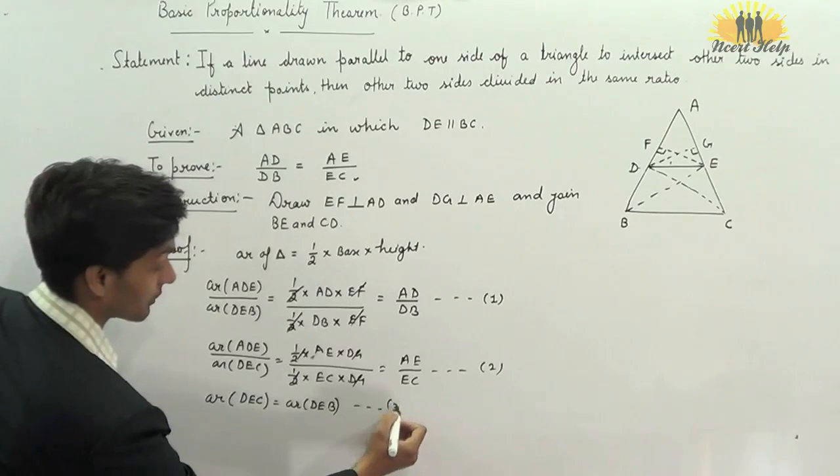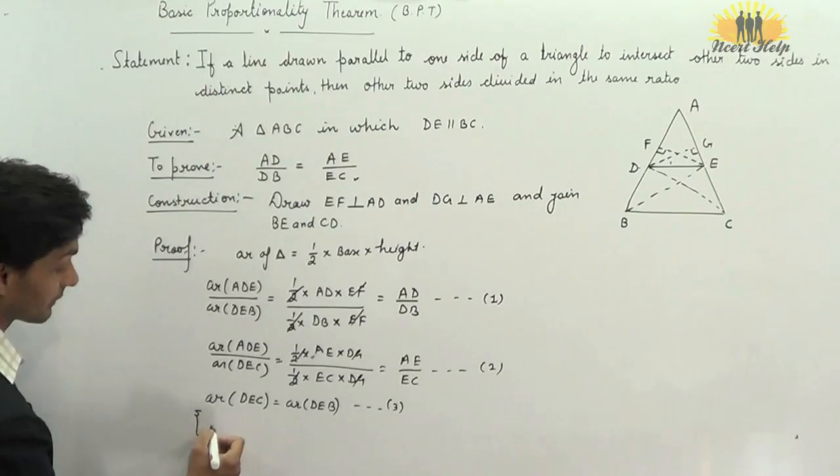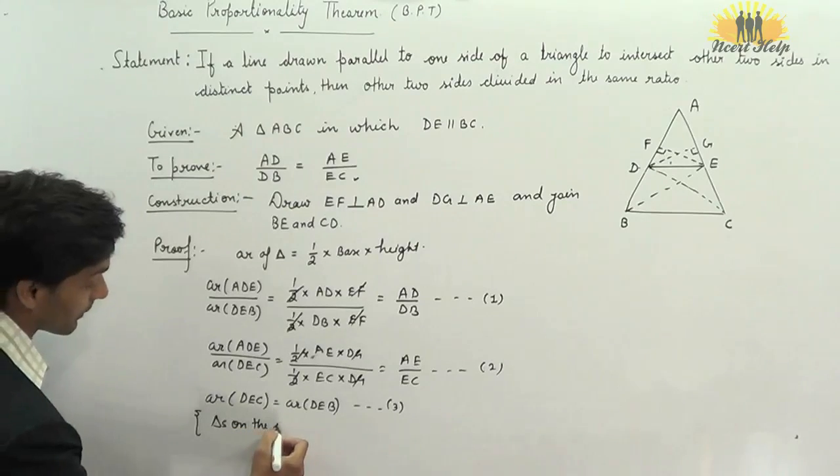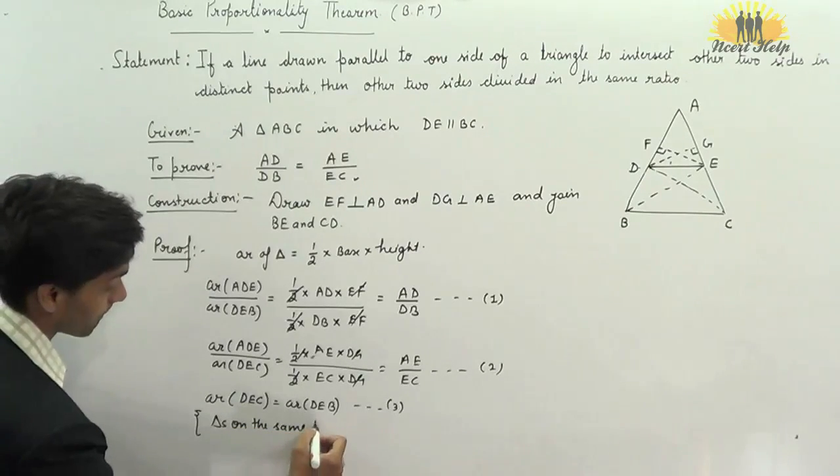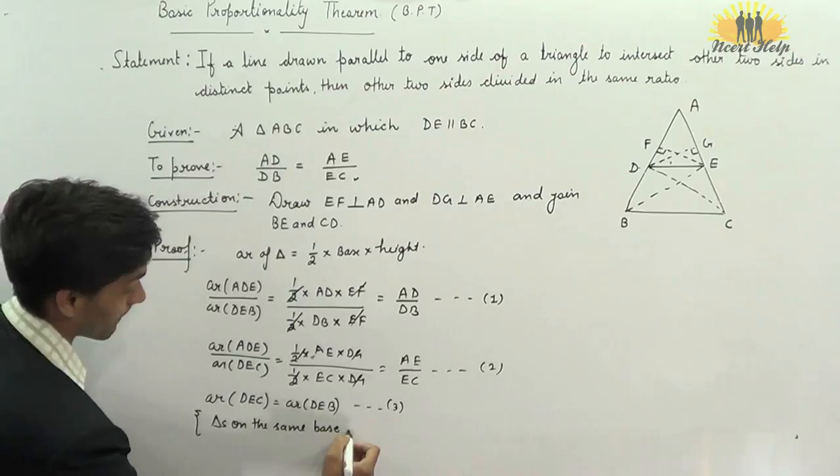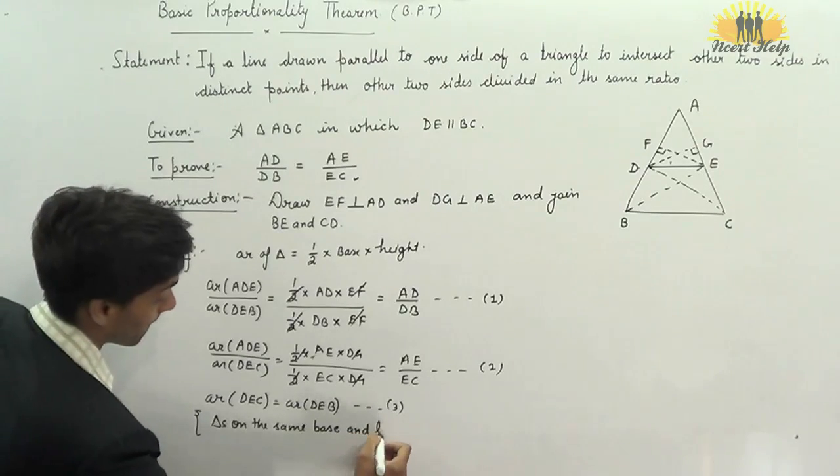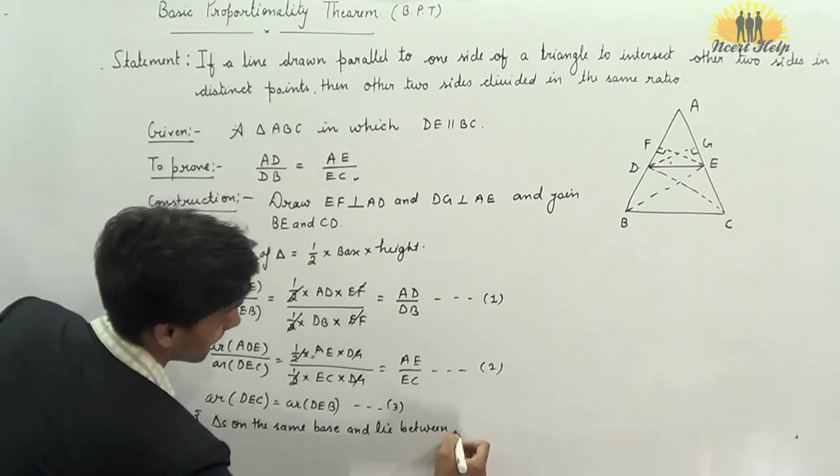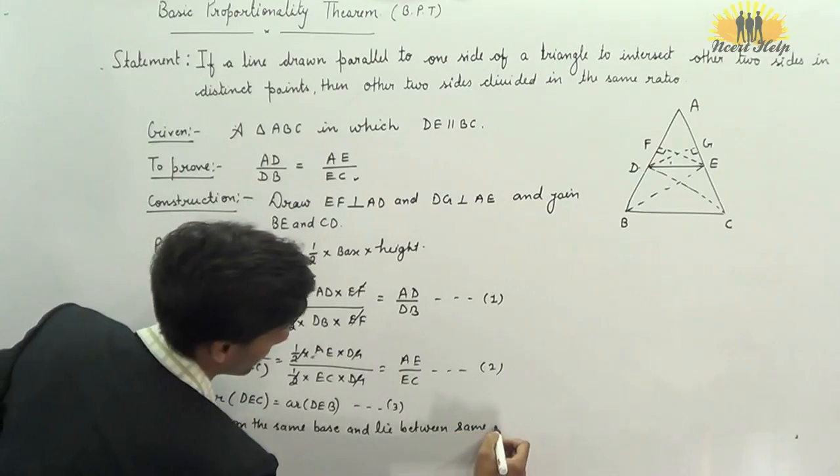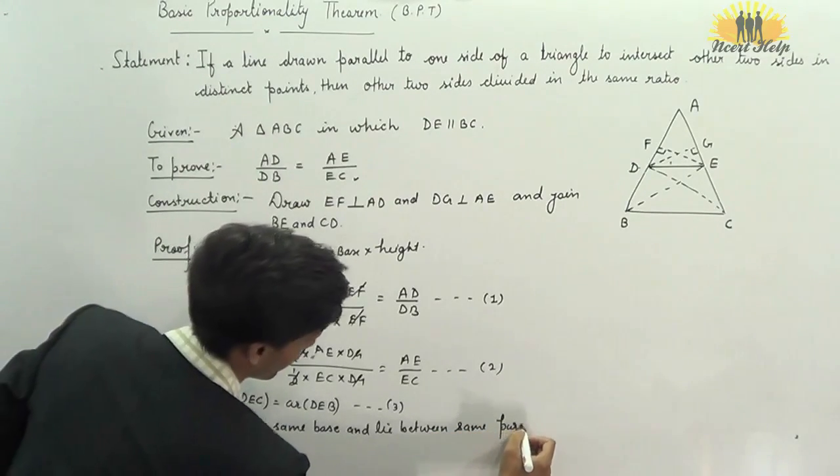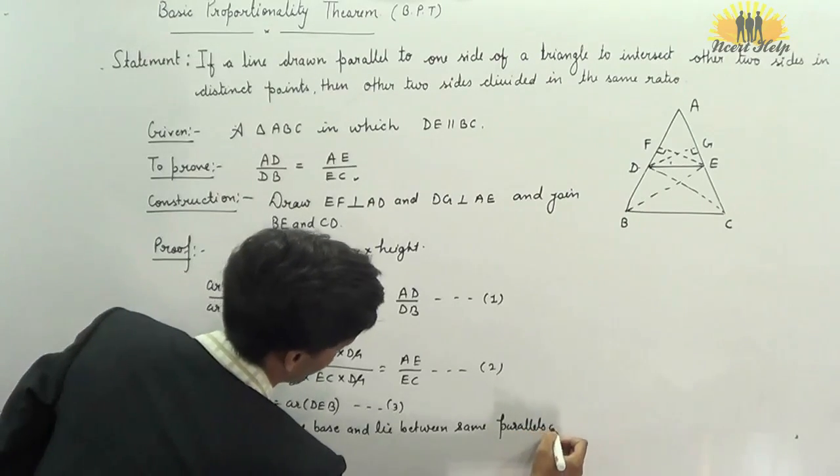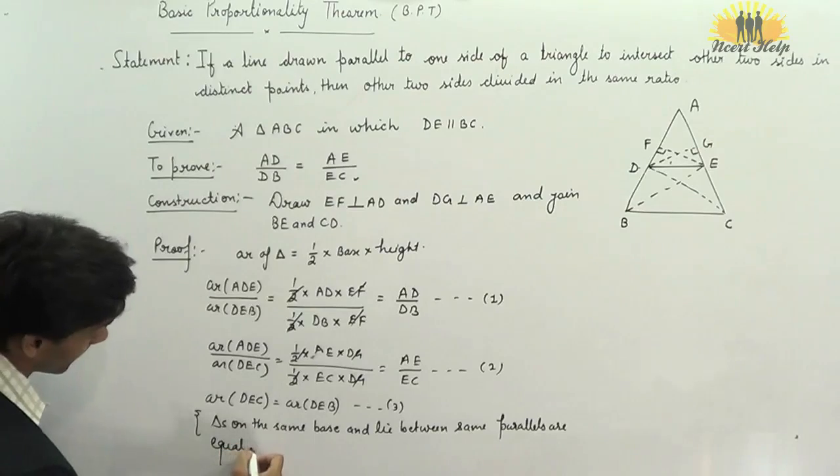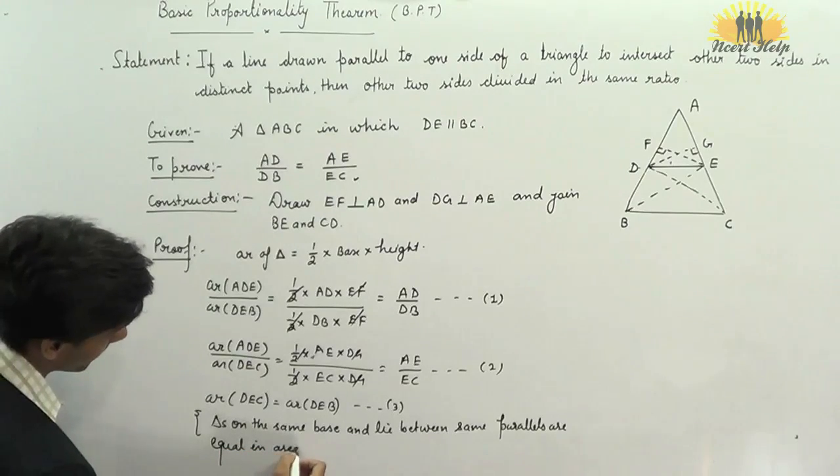Write it is equation number 3, and write its reason. Triangles on the same base and lie between same parallels are equivalent in area.